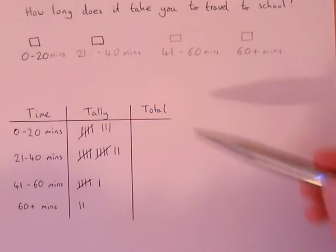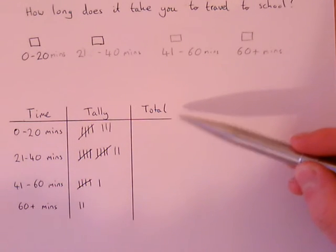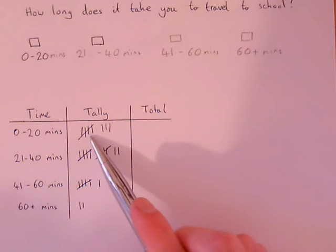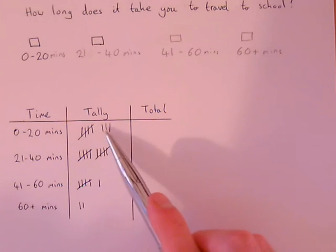So now I need to count up my totals and put these in the total column. So here, each one of these means 5, so I've got 5, 6, 7, 8.